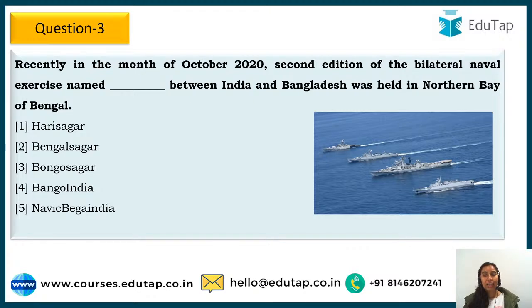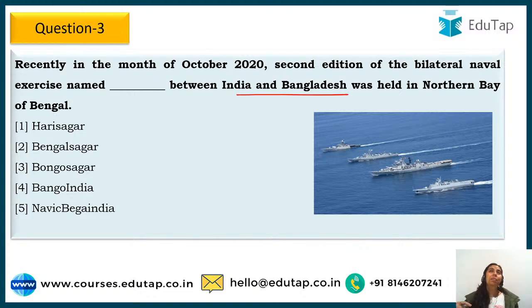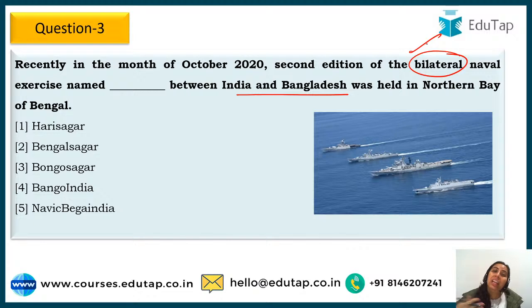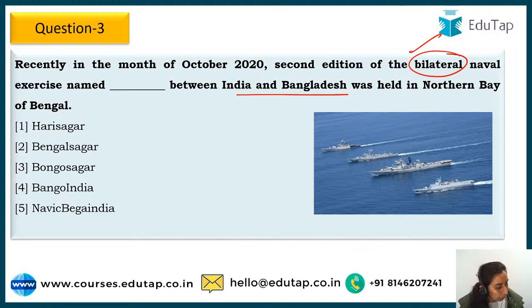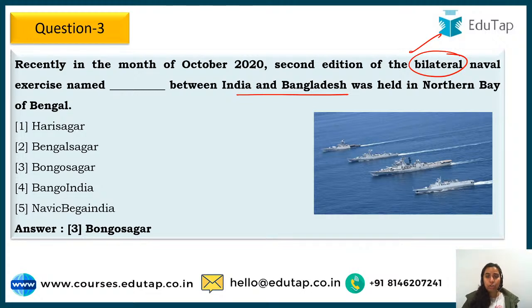Question 3: Recently in October, the second edition of the bilateral naval exercise named Bongo Sagar between India and Bangladesh was held in the Northern Bay of Bengal. Bilateral means between two countries; naval means Navy. The exercise conducted between Indian Navy and Bangladesh Navy is called Bongo Sagar. This year it took place in the Northern Bay of Bengal.